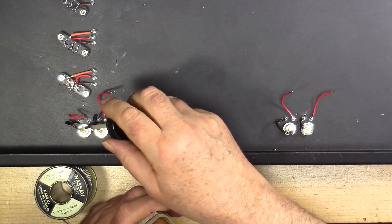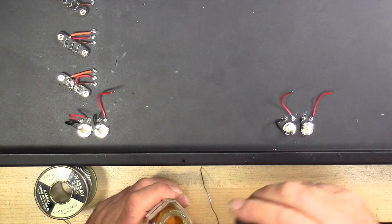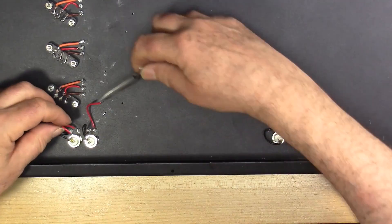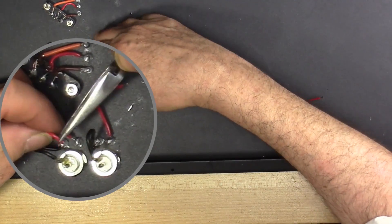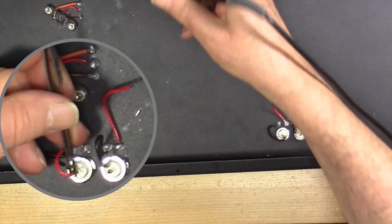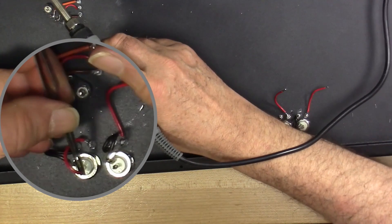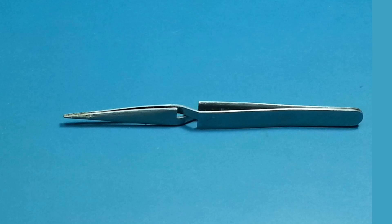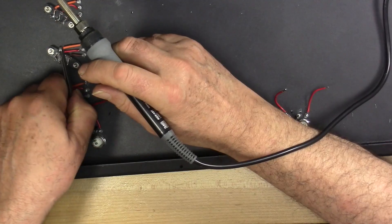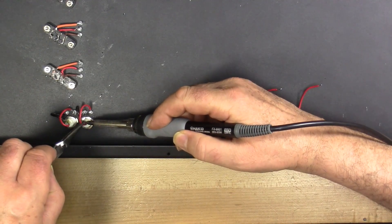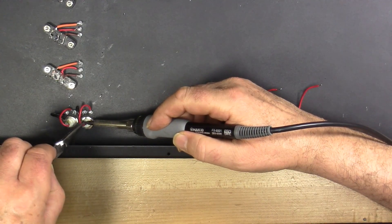I'm using a reverse action tweezers. When you press down on it, the jaws open. When you release pressure, the jaws close. So it makes it much easier to hold something in place. You're not exerting any pressure to clamp down on the wire. And you can also clamp the tweezers and not worry about releasing pressure on it.